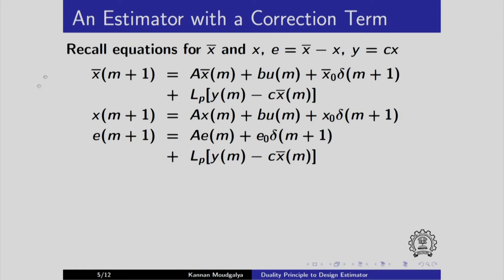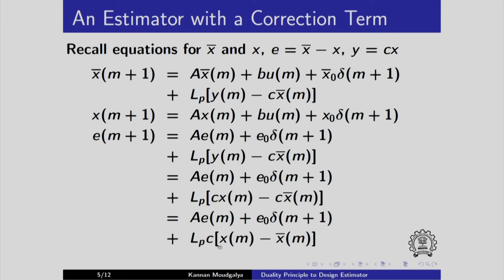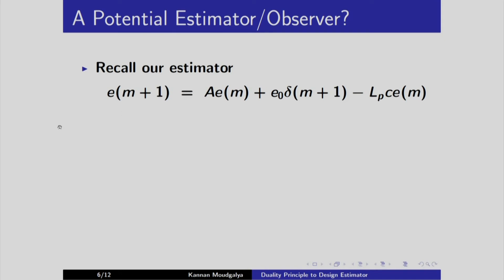This is the summary of all the equations we had in the previous slide. Let us replace in the place of y as cx. We have cx m minus cx bar. And once again, copy the first line. Second line, I pull out this c. I have x minus x bar. What is x minus x bar? From here, you see that it is minus E. I write this equation. Ae plus E0 into delta minus Lp into Ce. This is the equation we arrived at in the last slide. I group the terms involving E here. I get this.